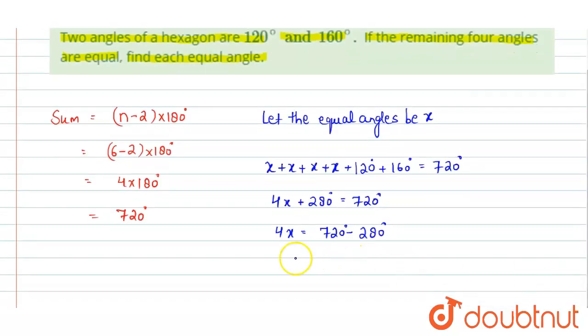and this will give us 4x equals to 440, and from this we'll get the value of x equals to 440 by 4, that is 110 degrees.